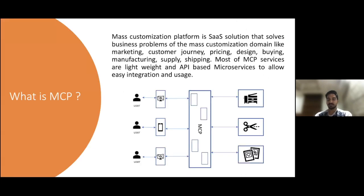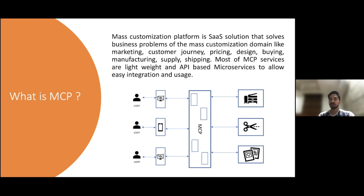MCP stands for Mass Customization Platform. It's a SaaS solution provided by Simpress Technology to solve business problems in the mass customization domain. These are businesses that try to provide very custom user experiences or custom products — like a mug with your own photo and name, or a pen with a brand name. MCP tries to solve problems for such businesses, and solutions might range across different domains like marketing and customer journey.